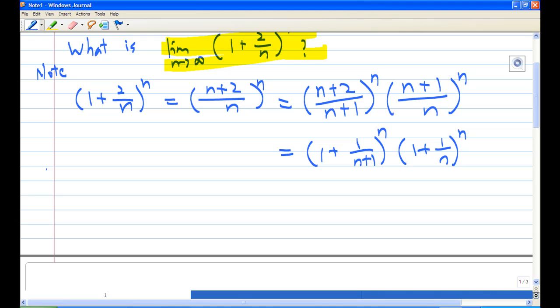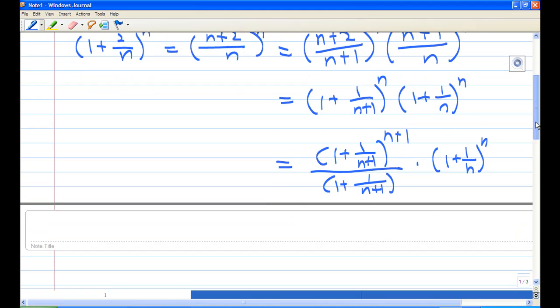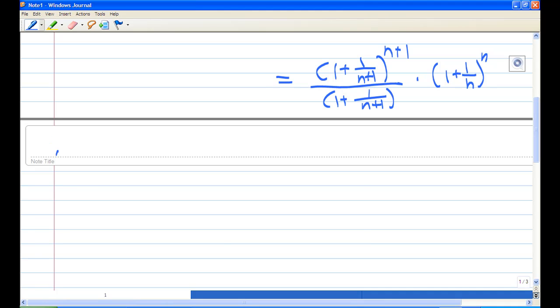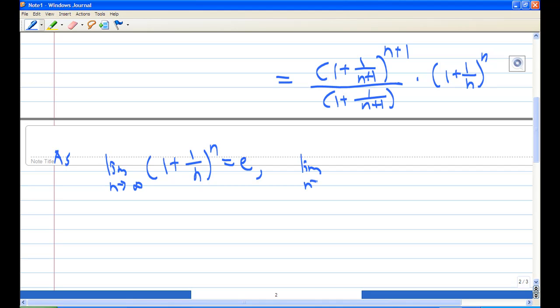Now we can apply the product rule. Note that (1 + 1/(n+1)) is actually (1 + 1/(n + 1)). And (1 + 1/(n+1))^(n+1) is e. We also know that the limit as n gets larger and larger, (1 + 1/n)^n is e. So we expect (1 + 1/(n+1))^(n+1) is e.